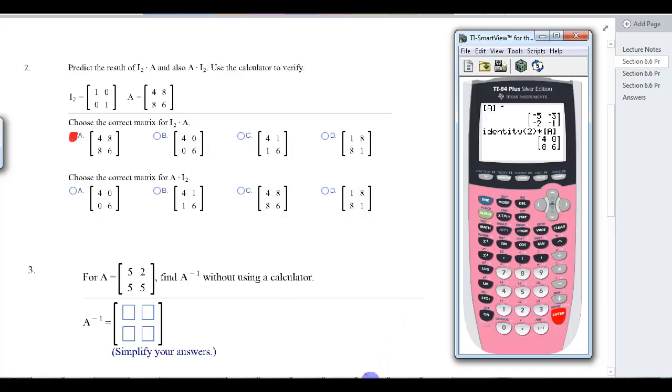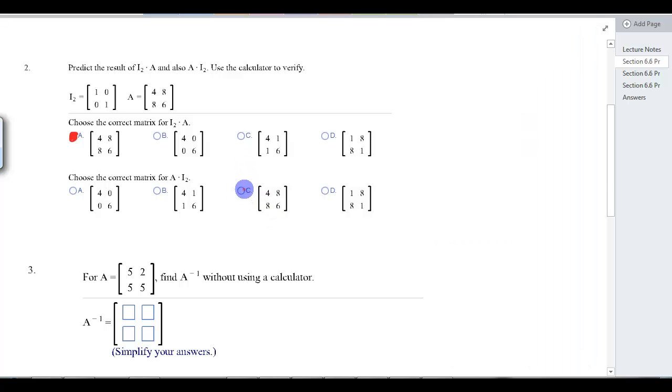Now they want us to do A times I2. Second matrix, A times second matrix, go to math, 5, 2, close, enter. And we get the same thing, which in this is this choice. Now, we know that math is not necessarily commutative with matrices. But when you're multiplying by the identity, it's going to give you the same thing. So you're fine there.